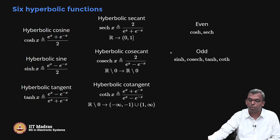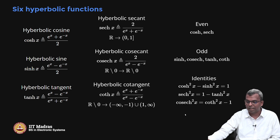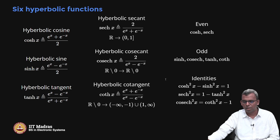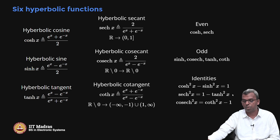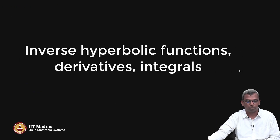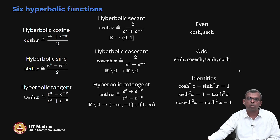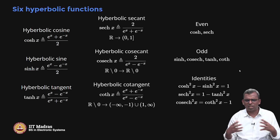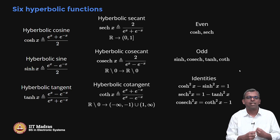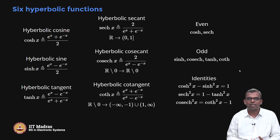Cosh and sech are even functions; all the others are odd. There are some nice identities they satisfy: cosh²x − sinh²x = 1, sech²x = 1 − tanh²x, and csch²x = coth²x − 1. These are direct identities — just plug in the exponential expressions and they are proven. These functions are simple to use in various ways for understanding the function. That concludes this lecture on hyperbolic functions. I hope you saw those derivative properties — they are really powerful and find many applications in engineering and science problems. Thank you very much.